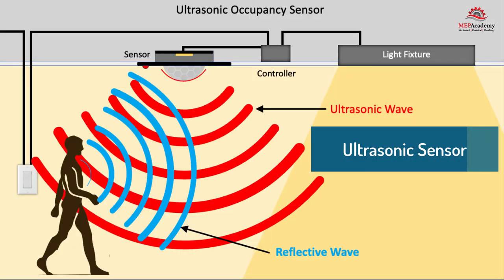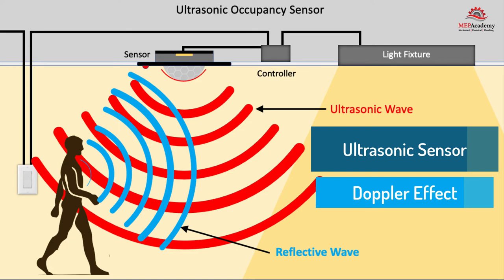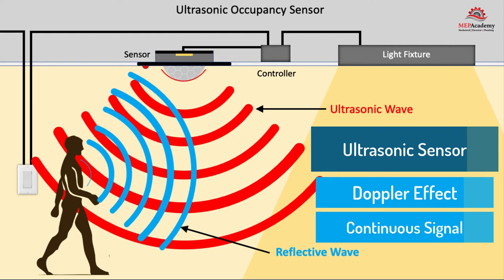An ultrasonic sensor emits high frequency sound waves that bounce around the room and objects but are not heard by humans. The sensor picks up any movement by noticing a change in sound wave frequency. This is based on the Doppler effect — the change in frequency of a wave in relation to an observer moving relative to the wave source. Since the ultrasonic sensor sends out a continuous signal, its electrical power consumption will be higher than the wireless passive infrared sensor.